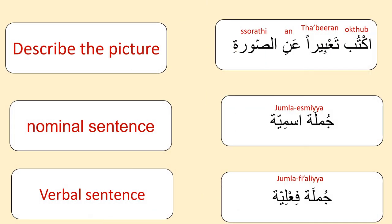Next: 'uktub ta'bīran 'anis sūra' means describe the picture. 'Jumla ismiyya' means nominal sentence, and 'jumla fi'liyya' means verbal sentence. I will explain nominal sentence and verbal sentence in my next videos.